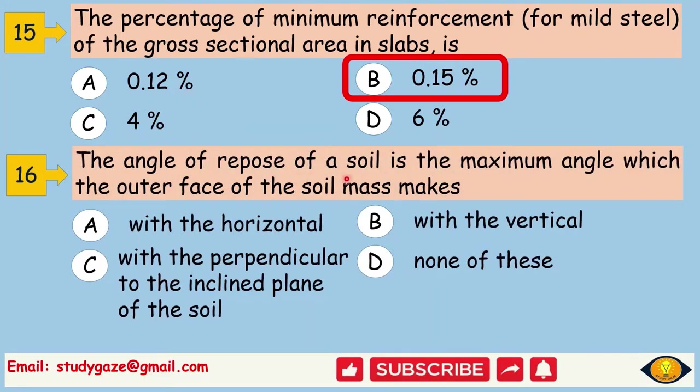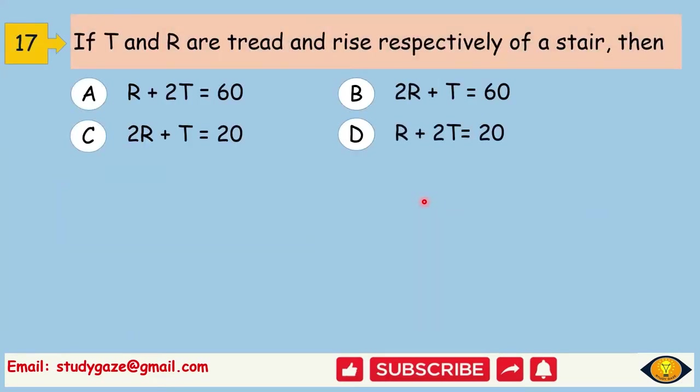The angle of repose of a soil is maximum angle which the outer face of the soil mass makes. Answer is with the horizontal. If T and R are tread and rise respectively of a stair, then 2R plus T should be equal to 60.